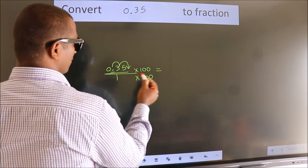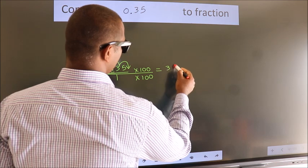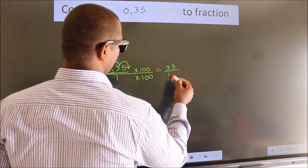Now 0.35 into 100, we get 35. In the denominator, 1 into 100 equals 100.